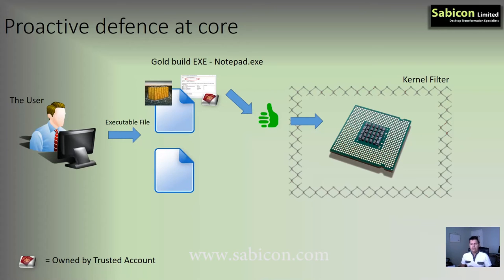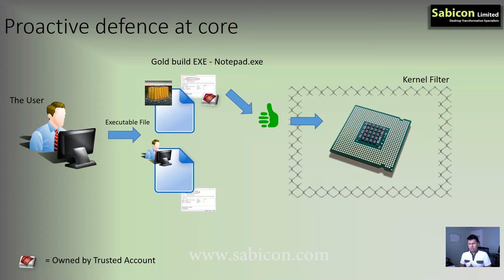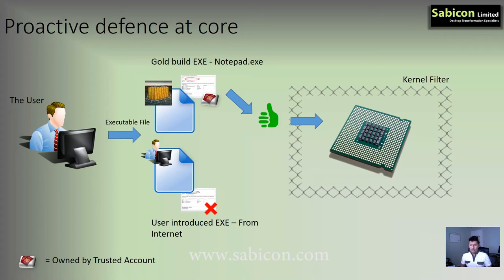Now if the user tries to download something and you've given them permission to save it on that gold build, then they will be the owner under NTFS ownership of that file. You've allowed them to store it onto that disk, therefore they must become the owner. So in this case we do exactly the same check right at the kernel driver - before it gets to the CPU - guaranteed to intercept every single form of executable. You don't need to know what the executable is; it's going through the kernel driver and we do a very simple check: who put this file here? In this case it doesn't have the passport - the file actually belongs to the end user - it is not part of the trusted owners list, therefore it is blocked.